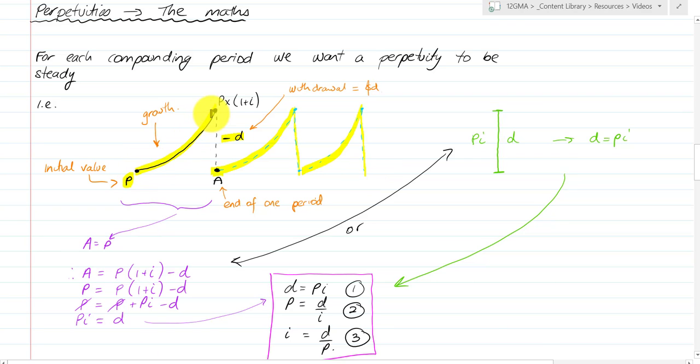The growth is always the interest, and the interest is P times I. We earn whatever our original amount is times the interest rate, and then it declines by a value of D because we withdraw that amount. This leads to the formula that PI and D have to be the same length, therefore D equals PI.